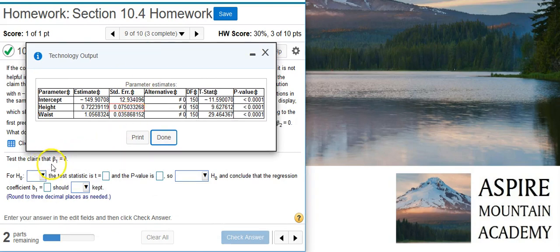So to test the claim that beta 1 equals 0, first we need to find our null hypothesis, which of course is a statement of equality. Here our claim is a statement of equality. Well, we can't have that be our alternative hypothesis, because equality by definition belongs with the null hypothesis. So this is going to be our null hypothesis. So I select that option from the drop-down.